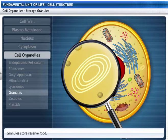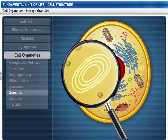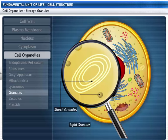Let's now focus on the storage granules. They are of two types. Starch granules are storage droplets of starch. Lipid granules are storage droplets of fat.